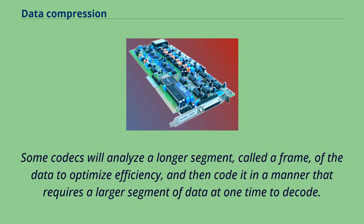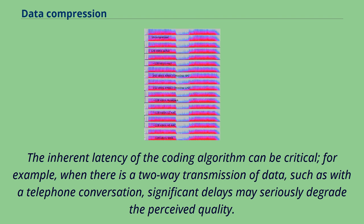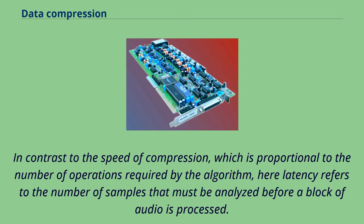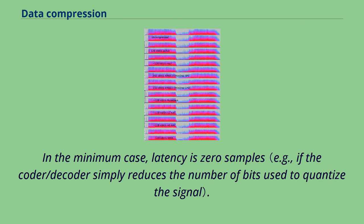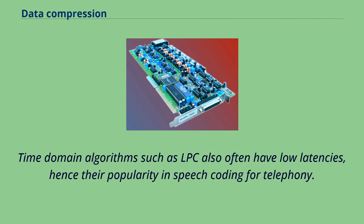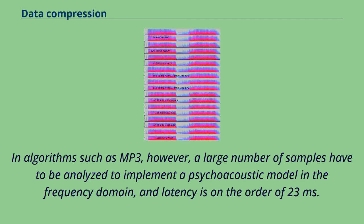Some codecs will analyze a longer segment, called a frame, of the data to optimize efficiency, and then code it in a manner that requires a larger segment of data at one time to decode. The inherent latency of the coding algorithm can be critical. For example, when there is a two-way transmission of data such as with a telephone conversation, significant delays may seriously degrade the perceived quality. In contrast to the speed of compression, which is proportional to the number of operations required by the algorithm, latency refers to the number of samples that must be analyzed before a block of audio is processed. In the minimum case, latency is zero samples. Time-domain algorithms such as LPC also often have low latencies, hence their popularity in speech coding for telephony. In algorithms such as MP3, however, a large number of samples have to be analyzed to implement a psychoacoustic model in the frequency domain, and latency is on the order of 23 ms.